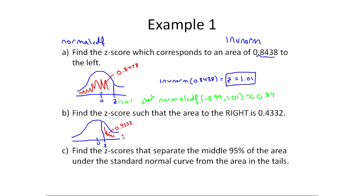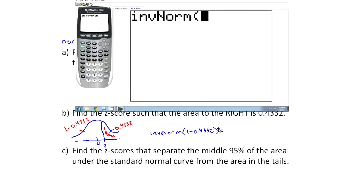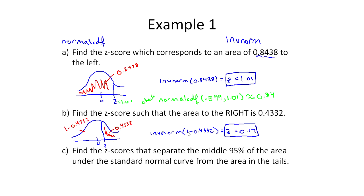The problem is inverse normal wants the area to the left, but the total area under the curve is 1. So what I could actually do to find this area over here is take 1 minus 0.4332. I could do inverse norm of 1 minus 0.4332, go through the menu on the calculator, that will give me z, and in this case I get z equals 0.17. So a very small z-score, that means this is really close to zero.